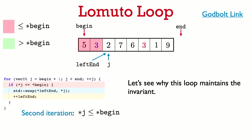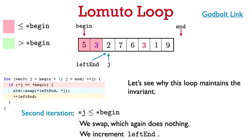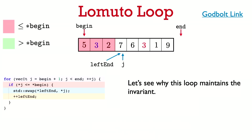In the second iteration, the element pointed to by j is 2, which is at most the pivot element 5. The if condition is true, we do a swap — which again does nothing since leftend and j point to the same element — and we increment leftend again. At the start of the third iteration, leftend and j have been incremented again, and all elements in the red region are still at most the pivot, so the invariant holds.